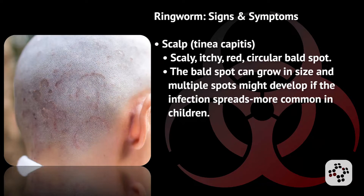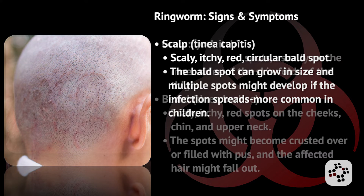If ringworm is on the scalp, it is known technically as tinea capitis. It presents as a scaly, itchy, red, circular bald spot. The bald spot can grow in size, and multiple spots may develop if the infection spreads. This is more common in children.